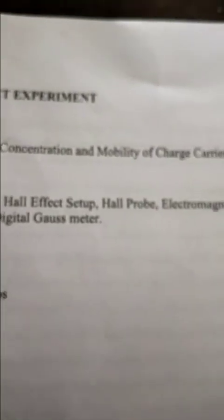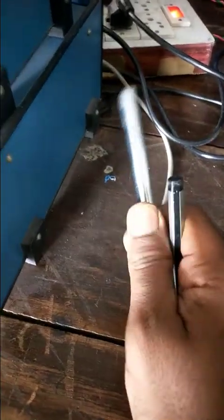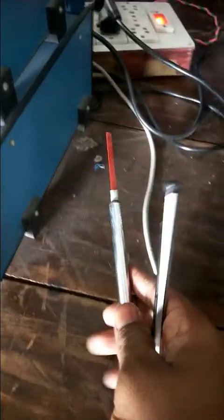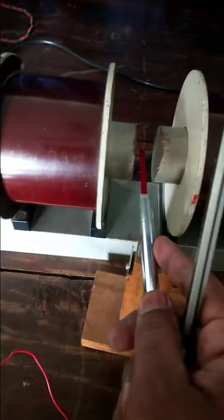This total one is a Hall setup. Now I'm showing you the Hall probe — this is your Hall probe. The red one is the Hall probe for reference. We are going to measure the reference magnetic field by keeping this in the magnetic field.